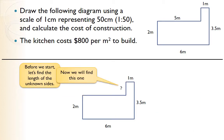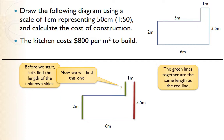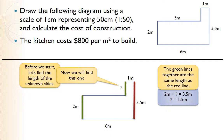Similarly, for the other unknown side: question mark plus two equals 3.5 meters, because the red length equals the two green lengths added together. So two meters plus question mark equals 3.5, meaning the question mark is 1.5 meters — calculated by doing 3.5 take away two. You can always check: 1.5 plus 2 should give 3.5, and sure enough it does. Label the 1.5 on the diagram.